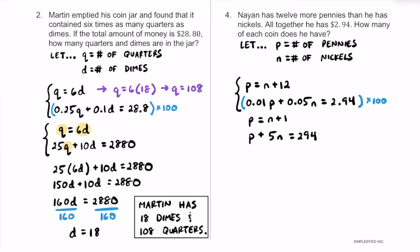Looking at the top equation, P equals N plus 12. Since they're in the same system, we can replace P in the bottom equation with that expression: N plus 12, plus 5N, equals 294.